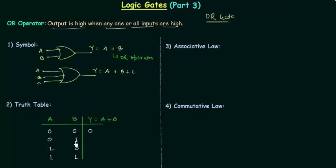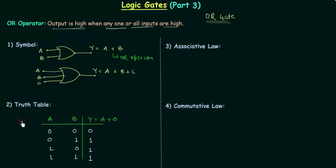In the second case, B is high, so output is high. In the third case, A is high, so output is high. And in the last case, both A and B are high, so output is high. This is the truth table for OR gate, and it is very important because we will use it a lot.